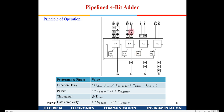In the second clock cycle the sum from the first stage is propagated one register forward and the carry is now available to the second full adder, which then computes sum and carry for A1, B1. In the third clock cycle the carry has reached the third full adder and it begins computing A2, B2. In the fourth clock cycle A3, B3 feeds the last full adder.